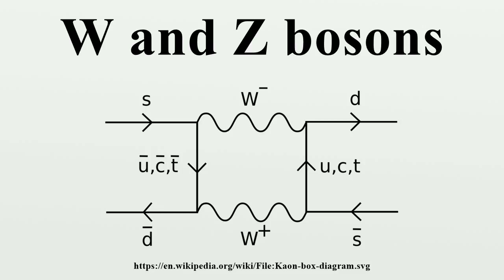Unitarity of the CKM matrix implies that |Vud|² + |Vus|² + |Vub|² = |Vcd|² + |Vcs|² + |Vcb|² = 1. Therefore the leptonic branching ratios of the W boson are approximately B ≈ 1/9 for each lepton flavor. The hadronic branching ratio is dominated by the CKM-favored u-d and c-s final states.